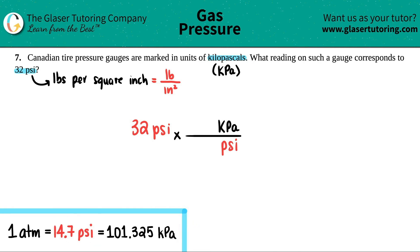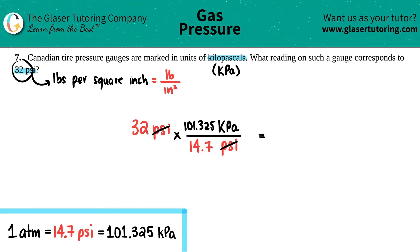Since these are equal to each other — 14.7 psi equals 101.325 kilopascals — we write 14.7 on the bottom and 101.325 on the top. Cancel out psi. Now we calculate: 32 times 101.325 divided by 14.7. Since we started with two significant figures, our answer should also be in two sig figs.